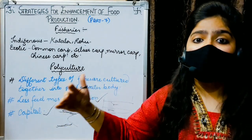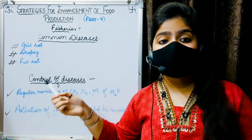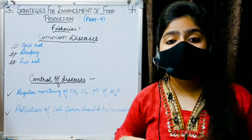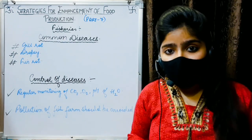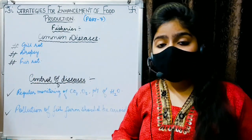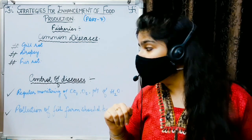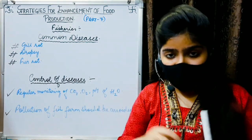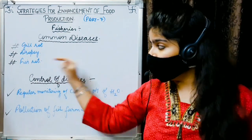Now let's talk about common diseases of fishes. First, gill rot — the gills of fishes turn black. Second, dropsy — the belly of fishes swells. Third, fin rot — the fins are cut off or damaged.